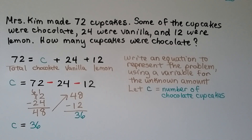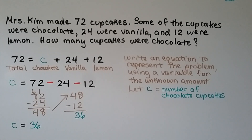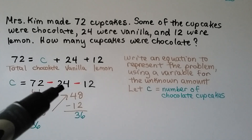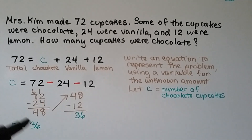Here's a word problem using whole numbers to help you completely understand what we're doing. Mrs. Kim made 72 cupcakes — some were chocolate, 24 were vanilla, and 12 were lemon. How many cupcakes were chocolate? We use c for chocolate. The equation working backward is: c equals 72 minus 24 minus 12. 72 minus 24 is 48, then 48 minus 12 is 36. So c equals 36 — she made 36 chocolate cupcakes.